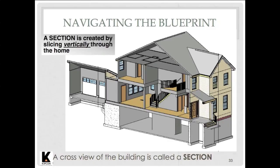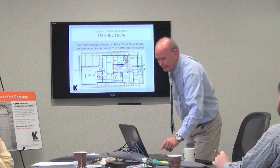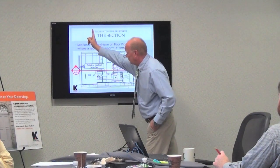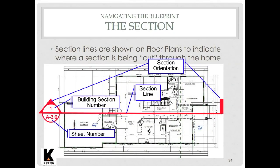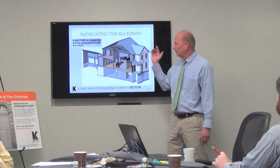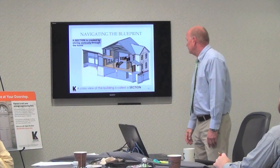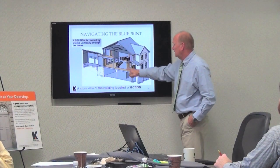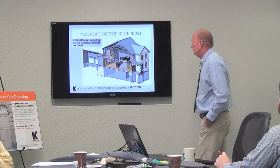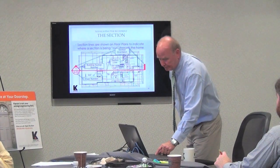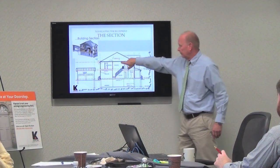The other drawing is the section — you take something and slice it right in half and look at it. The arrow shows us the direction. You can see that we sliced that building in half; looking in this direction, if we go to building section number one on page A3, we'll see what that looks like straight on. It's a great reference showing us vaulted ceilings, stairs and how they're laid out — a lot of information, just a little more visual.